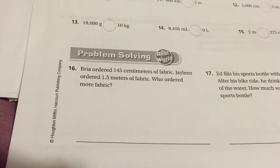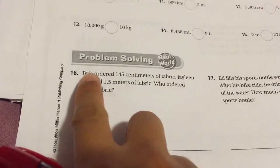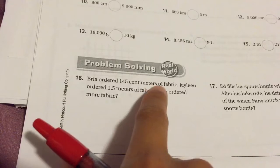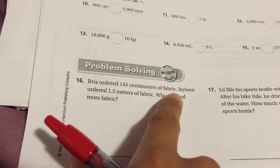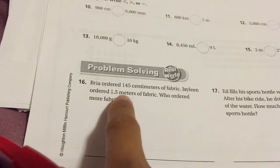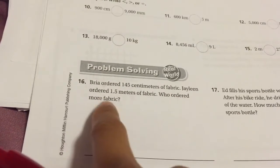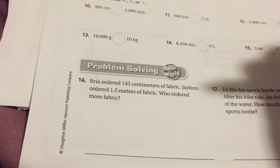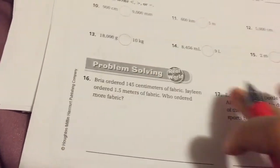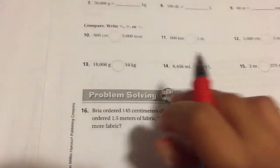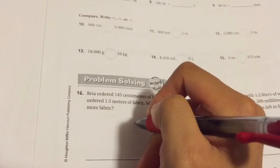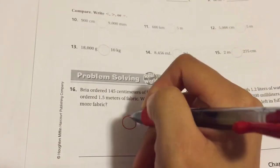For the problem solving, I do want to get you started. Bria ordered 145 centimeters of fabric. Jaylene ordered 1.5 meters of fabric. Who ordered more fabric? We have two people and we're comparing. If we're going to be comparing, it's going to look a lot like numbers 10 through 15. You're going to have one of those circles.